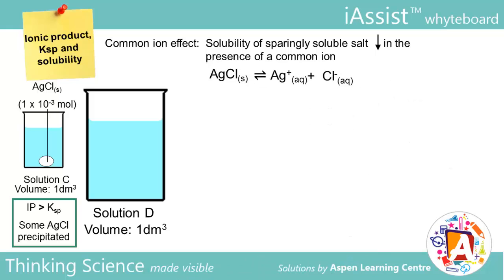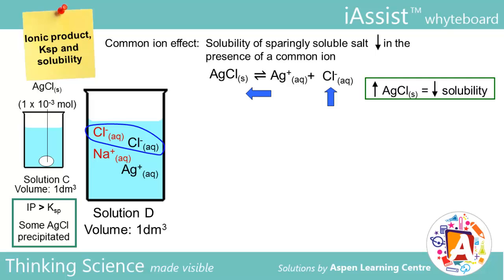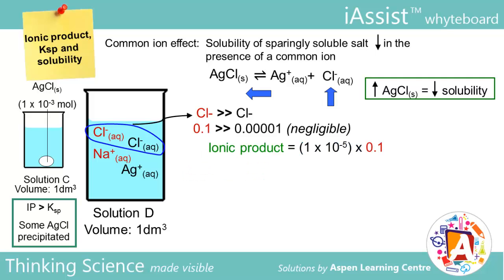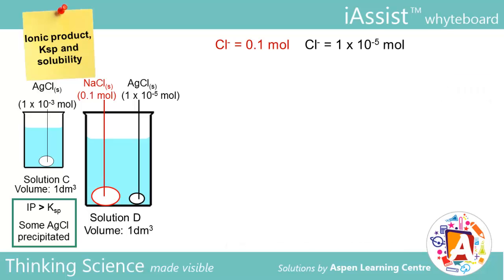This is easily explained using Le Chatelier's principle. Since there is more of the common ion on the right-hand side of the equation, the equilibrium will shift left to compensate, resulting in solubility decreasing. We add in 1×10⁻⁵ moles of AgCl, the same as solution A, but this time we also put in 0.1 moles of NaCl. These two salts have a common chloride anion. In such scenarios, we typically assume that the amount of Cl⁻ ions contributed by AgCl is negligible compared to that contributed by NaCl. So when calculating ionic product, we take the concentration of Cl⁻ to be 0.1 instead of 0.10001. The ionic product would then be 1×10⁻⁶. Ksp remains the same at constant temperature. Since the ionic product is greater than Ksp, precipitation of AgCl would occur.